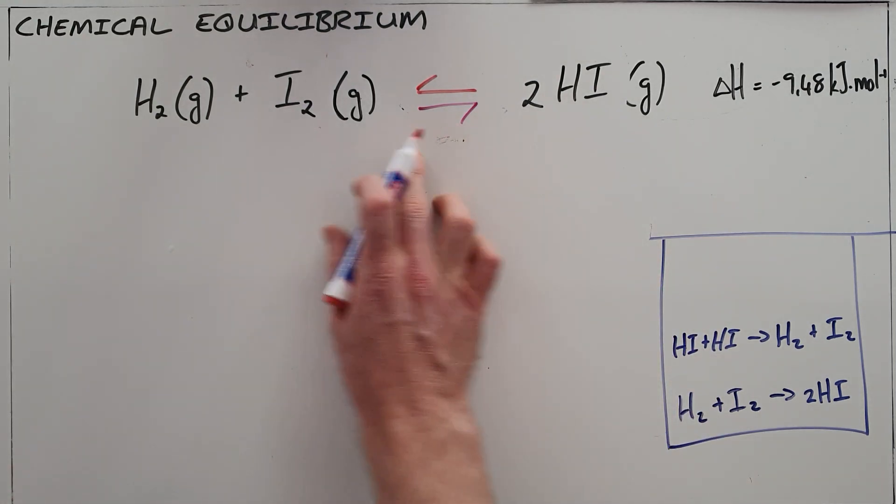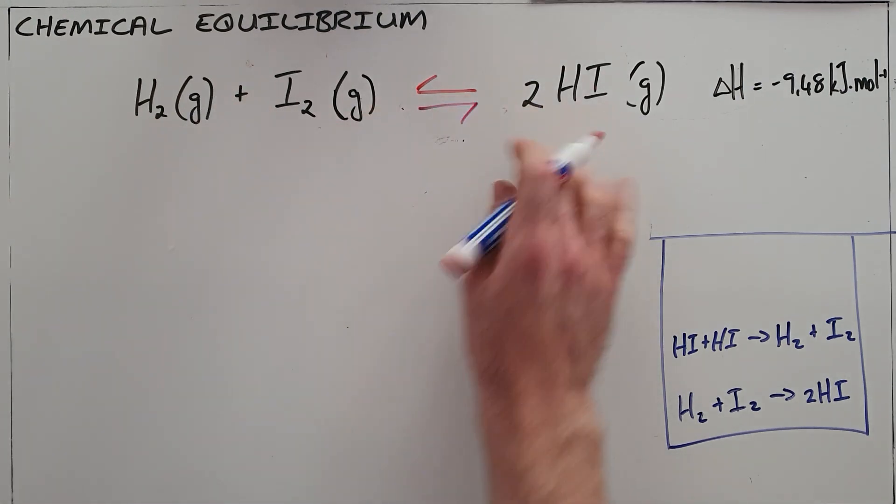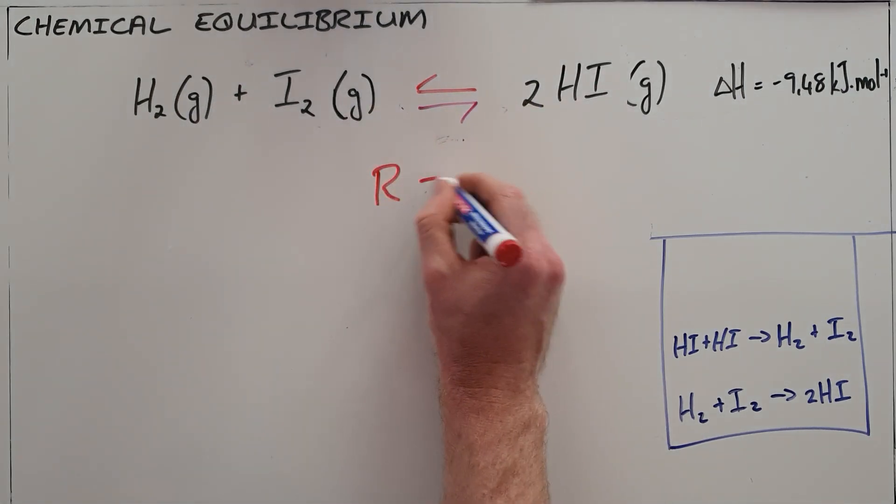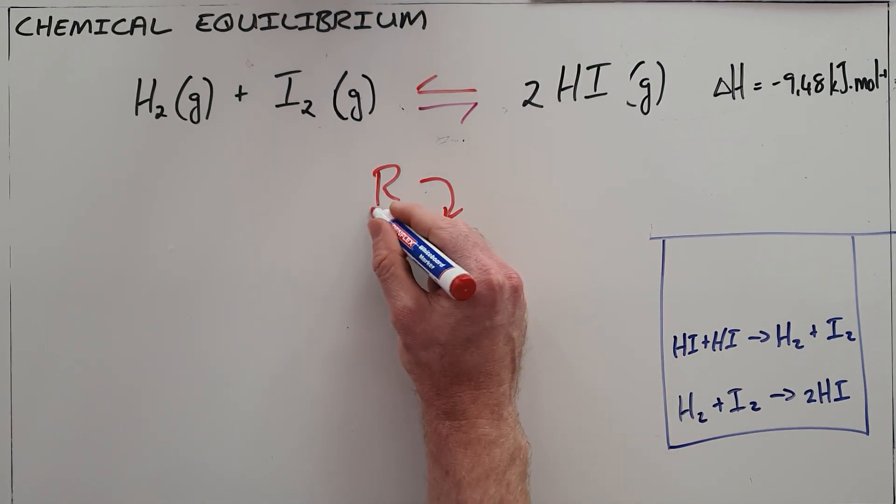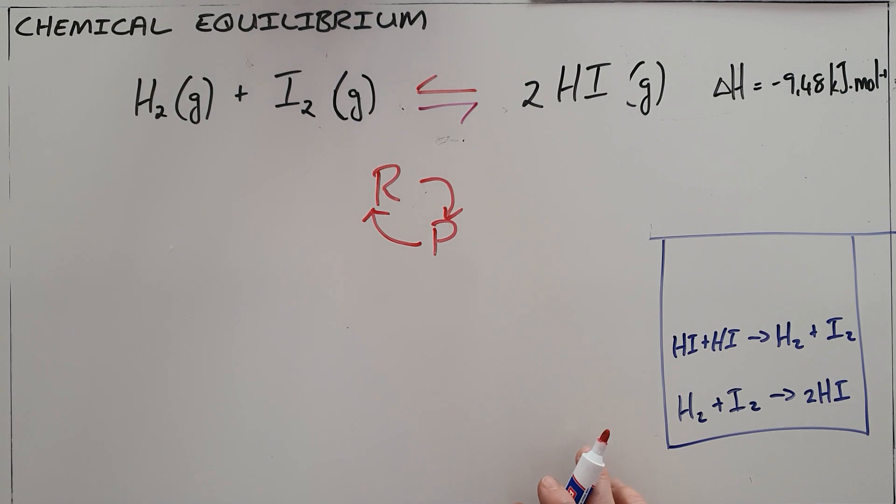Now what this leads to is essentially an endless process in which reactants are converted into products and those products are then converted into reactants once again, and you get the cyclical process known as chemical equilibrium.